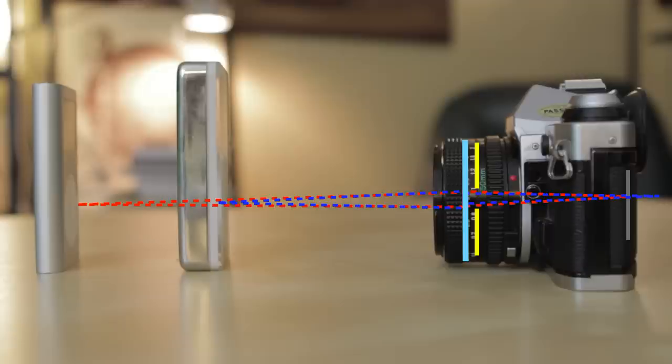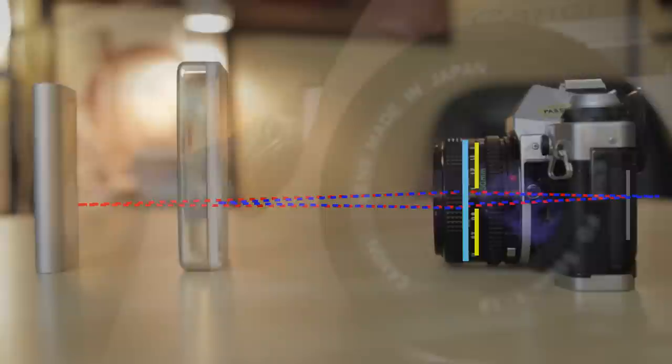But what would happen if we closed our aperture, bringing those two yellow lines together? You can see it smooshes the triangles. So much so, that the light from our close iPod, the blue dashed line, appears to come so close together at our sensor, that it's making a point, and in that way, the whole image would appear to be in focus. And that is how closing the aperture gives you a deep depth of field.